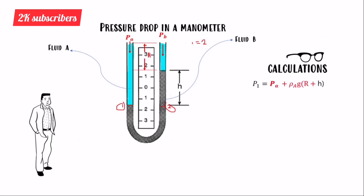For pressure at point one, we have PA plus the hydrostatic term rho·g·h. The density is that of fluid A (water), so we write rho_A. Gravity is 9.8 m/s². The height at point one is R plus H, giving us: P1 = PA + ρA·g·(R + H).